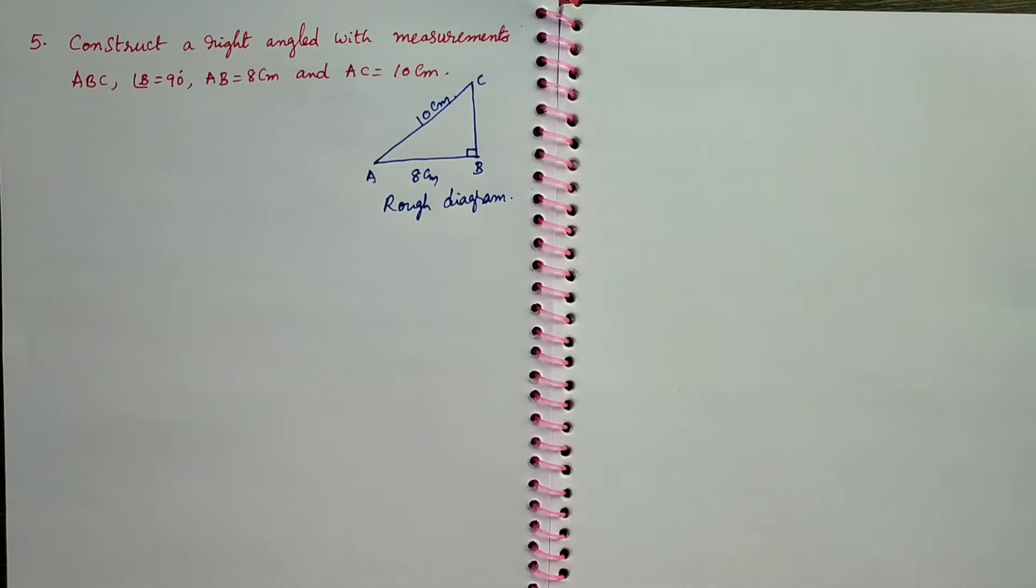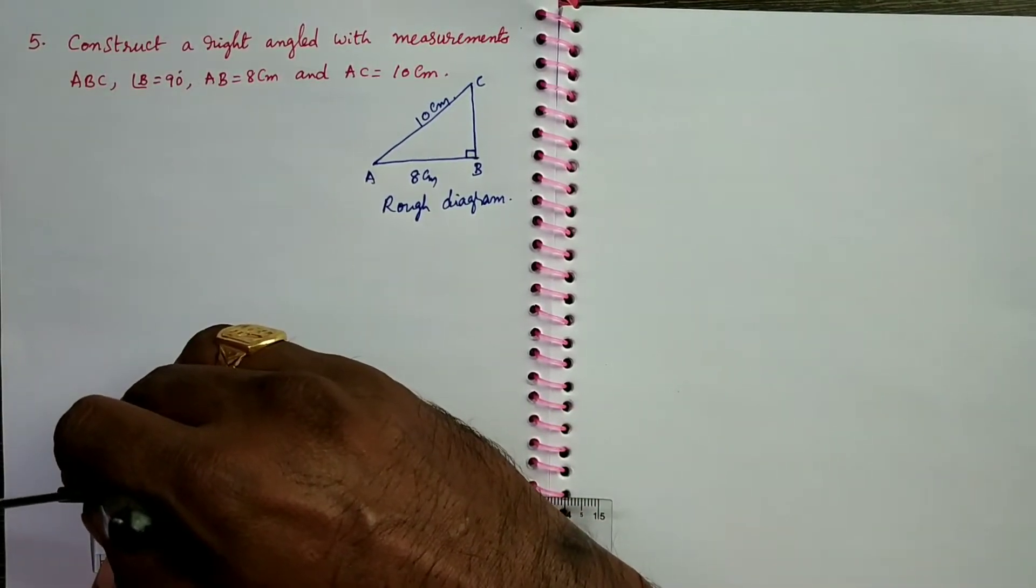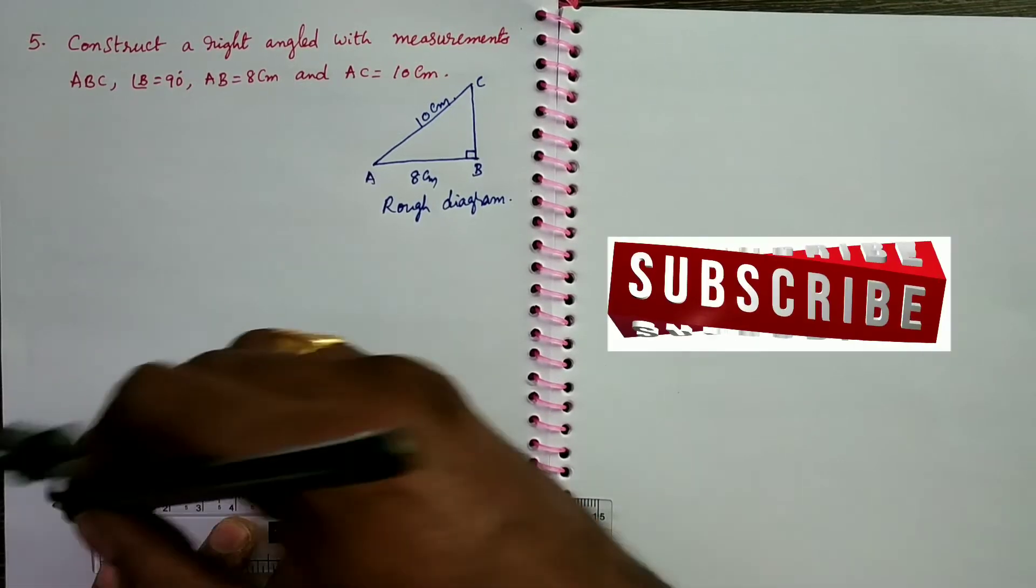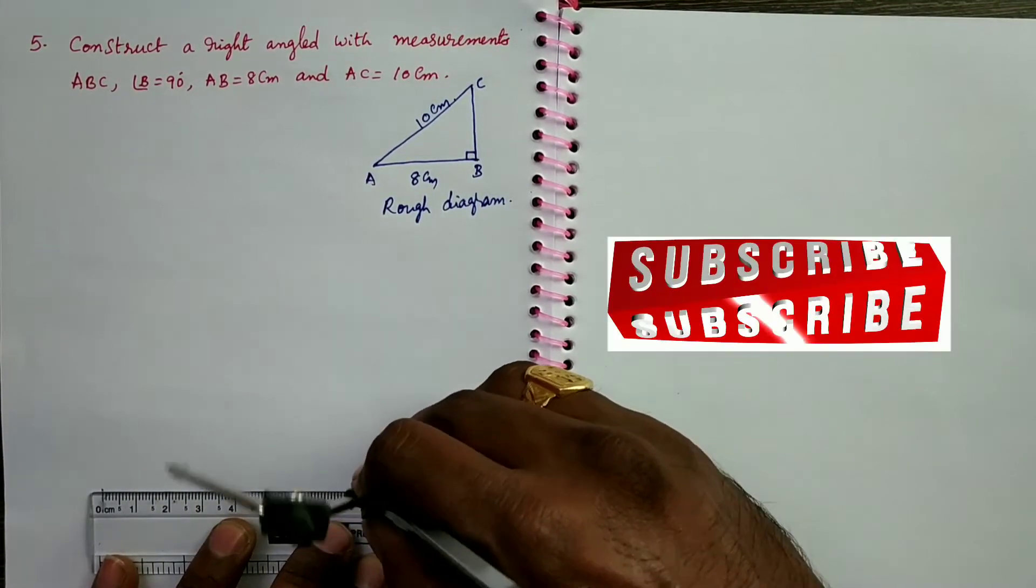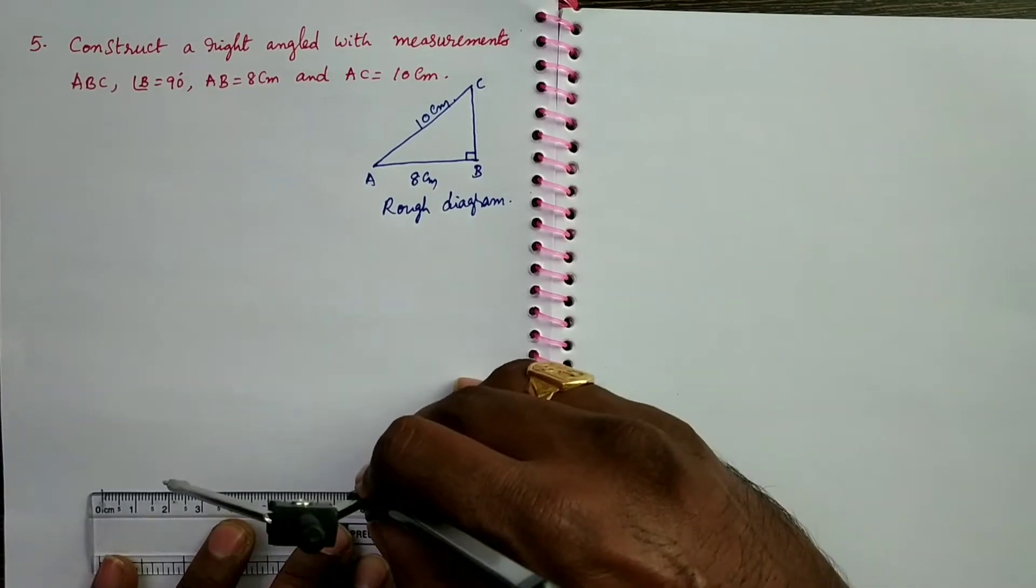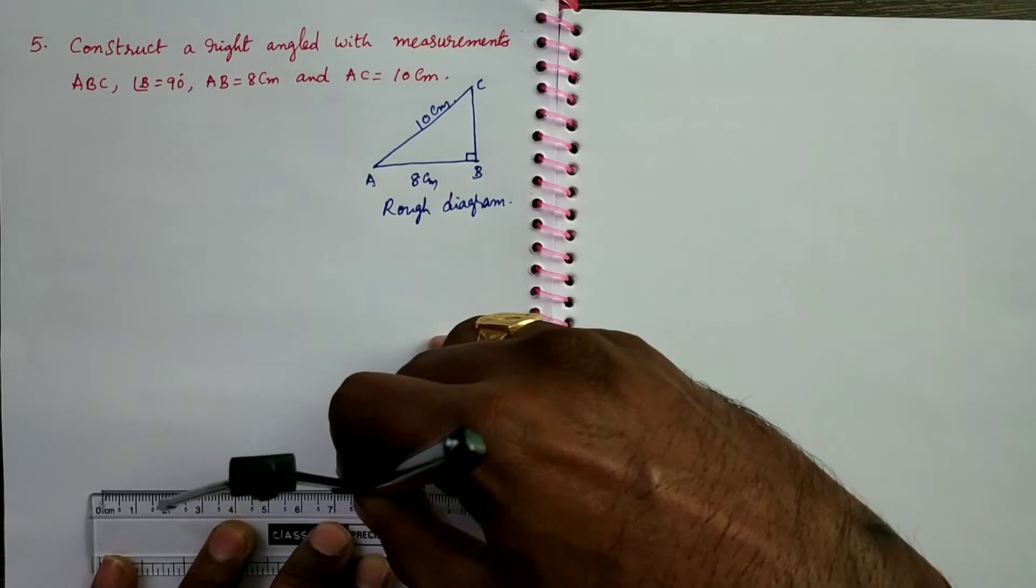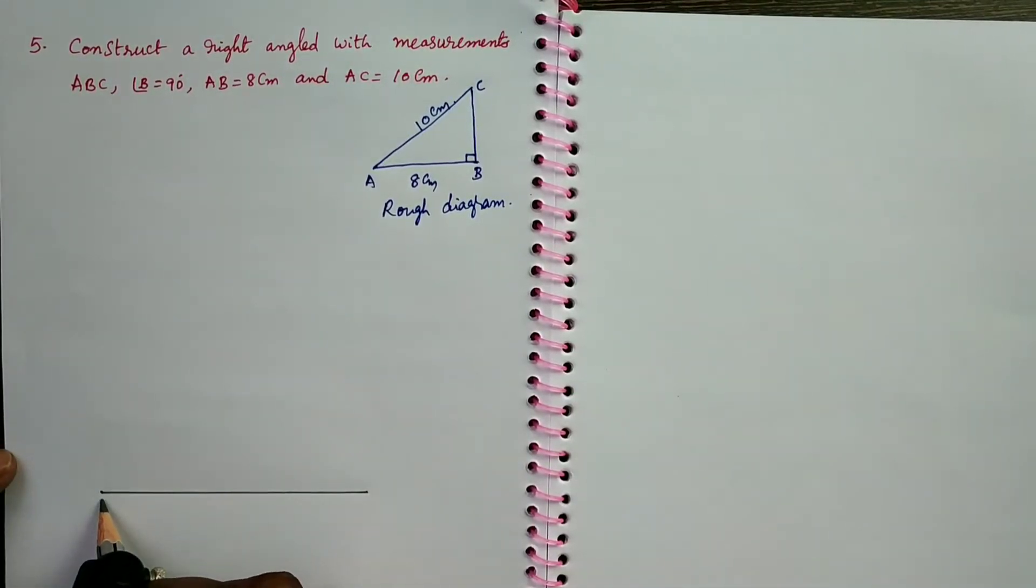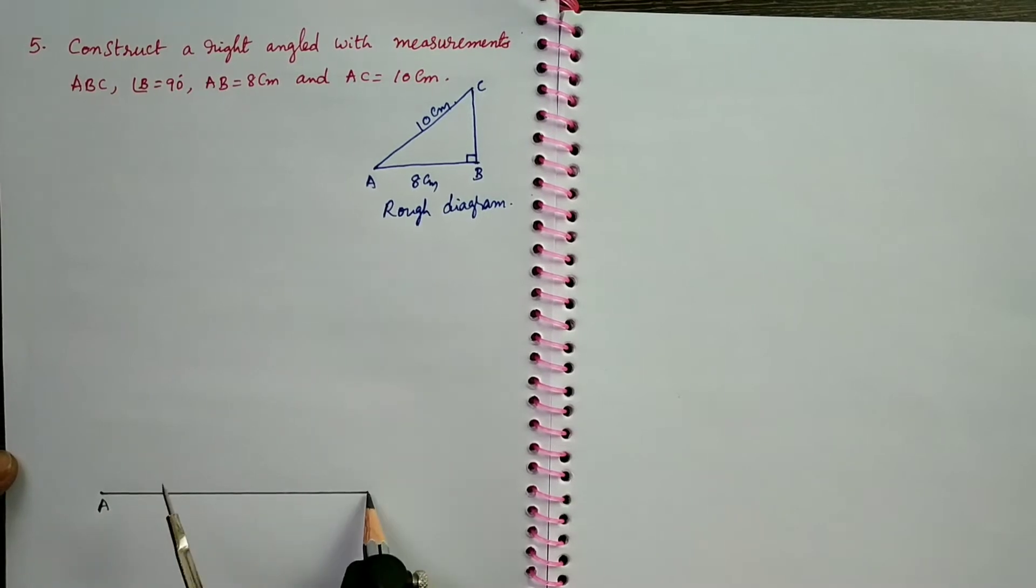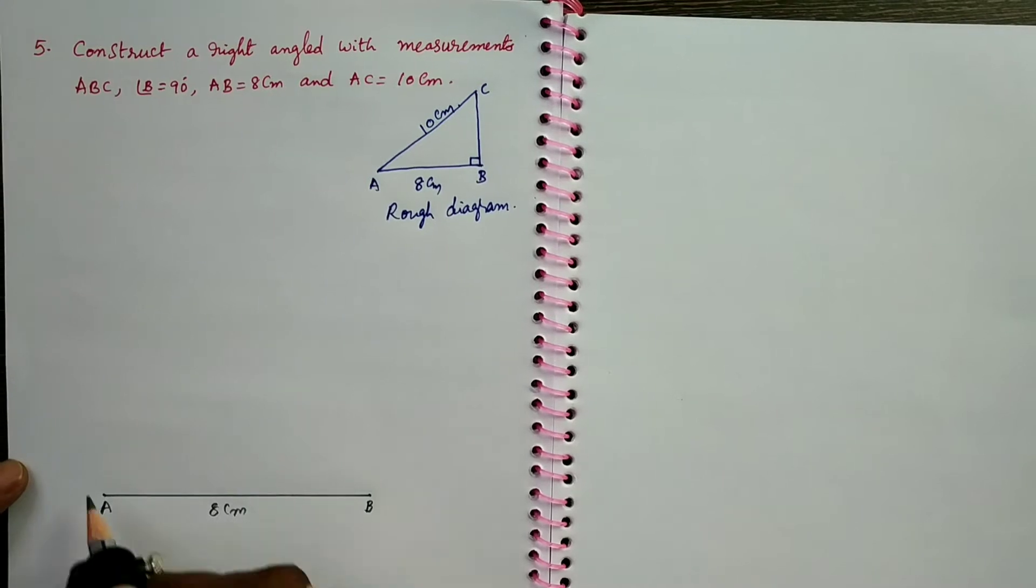Take a scale and keep a point at 0, one point on 8, draw line segment. So this is the line segment A, B. This line segment length is 8 cm.